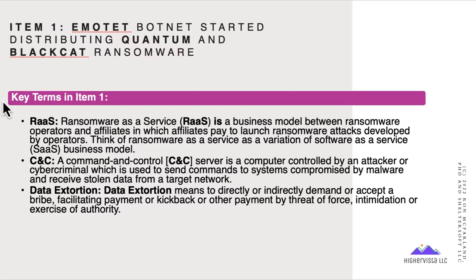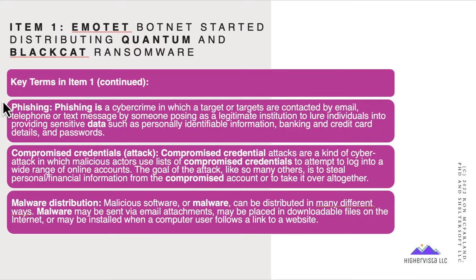A couple of key terms: RaaS, Ransomware as a Service, is a business model similar to SaaS — you pay for the service. Oftentimes RaaS has a cost-sharing model where, for example, if you provide a certain number of emails and they result in ransomware infections, you share costs in some way. CNC, command and control, is where a server controls a list of infected host computers and can download or exfiltrate data from them. Data extortion — essentially like ransomware, where files are held in lieu of payment. Phishing is a cyber crime that poses as a legitimate institution to lure individuals into providing sensitive data. Compromised credential attacks use lists of stolen credentials to attempt to log into a wide range of online accounts.